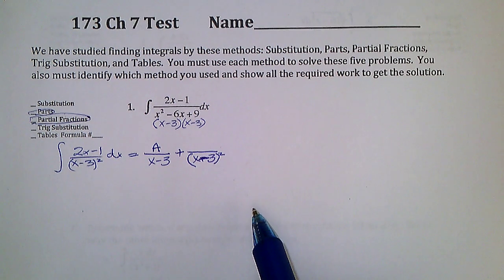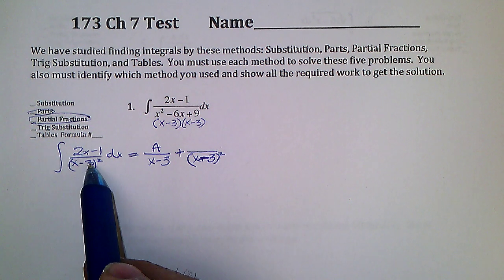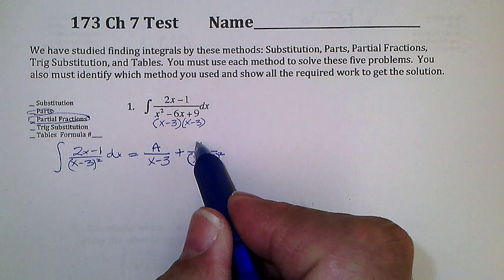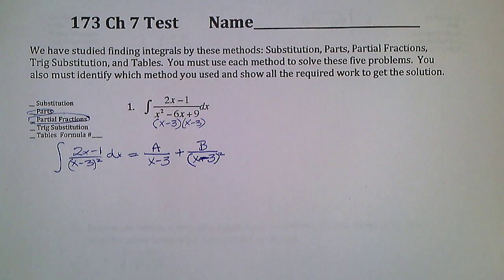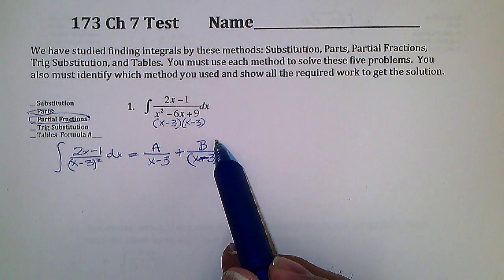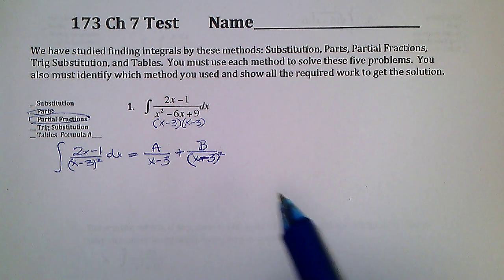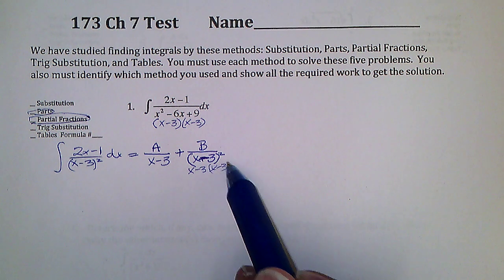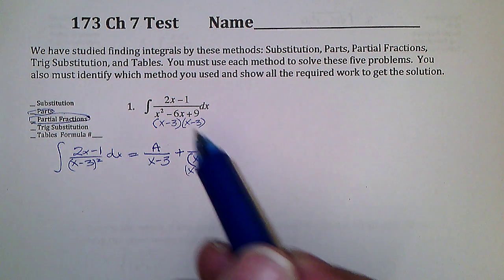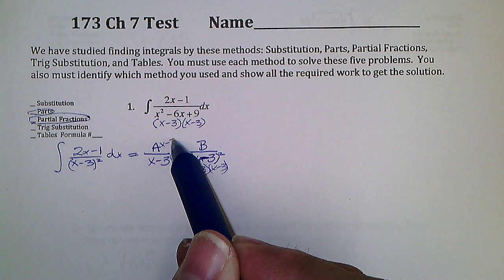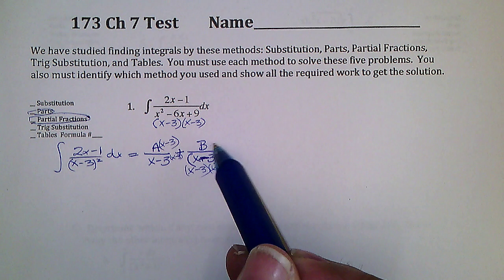If it repeats three times, you'd have another one with a third power. Now, some of you made this extremely complicated. To get a common denominator, you only need to multiply the first fraction by (x−3) once, and this second one by nothing — it's just the constant.